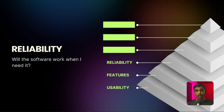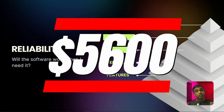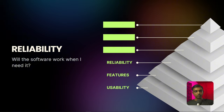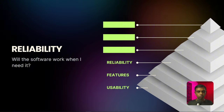In fact, I found this study: according to Gartner, the average cost of IT downtime is $5,600 per minute. So once we've figured out usability, the right features, and reliability, what's the next thing that people look for when evaluating software?